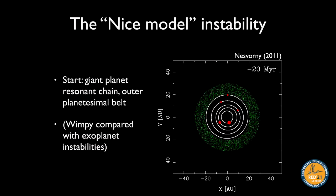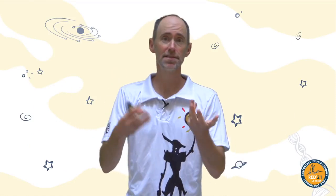Now let's zoom out and look at the outer solar system before revisiting the terrestrial planets. For giant exoplanets we think instabilities are ubiquitous, and it turns out there was likely also an instability in our own solar system — much milder than in typical giant exoplanet systems, but still key for our solar system's story.